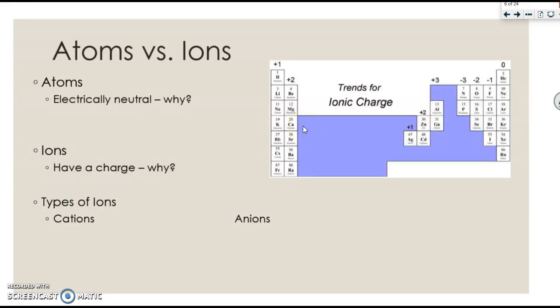Let's do a quick review of atoms and ions because it's been a little while since we've talked about them. Atoms are things that are electrically neutral, and the reason for that is because the protons equal the electrons. Ions are things that have a charge, and the reason for that is because the protons do not equal the electrons.